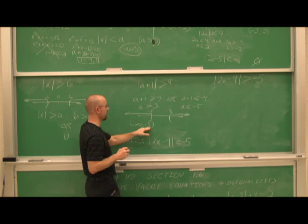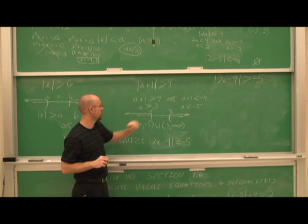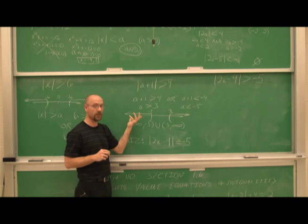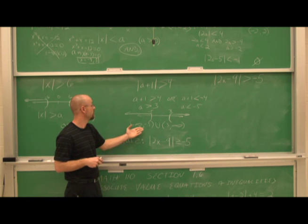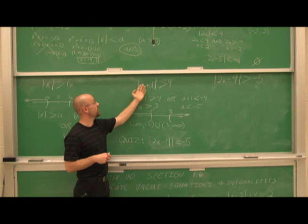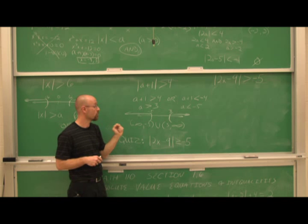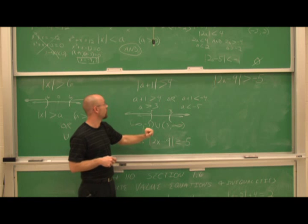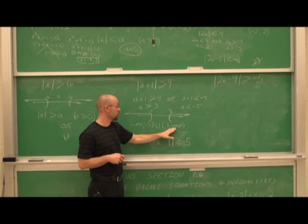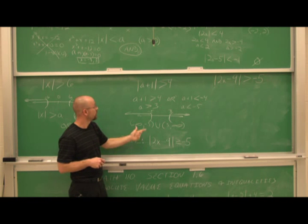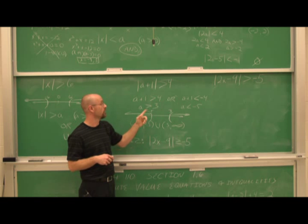Plotting on the graph: here we have negative 5 and here we have positive 3. a is less than negative 5 — any value to the left, not including the endpoint. And a is greater than 3 — any value to the right. We see two separate intervals that don't overlap, so we unite them with the union symbol. In interval notation: negative infinity to negative 5, union 3 to infinity. Everything has parentheses because the endpoints are not included and because we have infinity. Checking: negative 6 plus 1 is negative 5; the absolute value is 5, which is greater than 4 — true. Choosing 4: 4 plus 1 is 5; absolute value of 5 is 5, which is greater than 4 — true. That's why we call it an or statement.